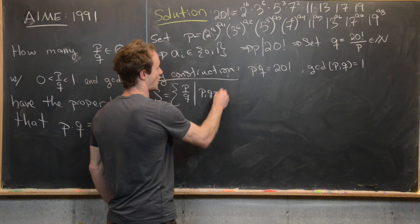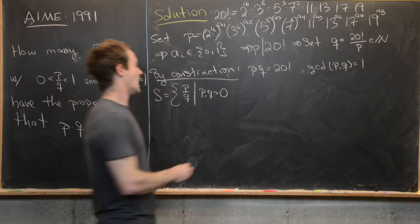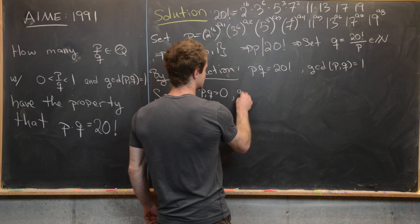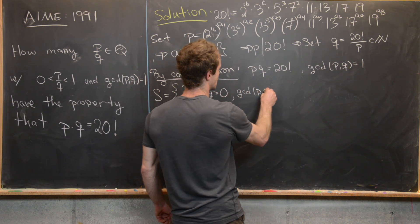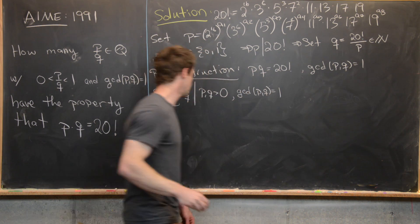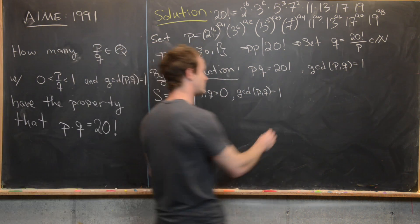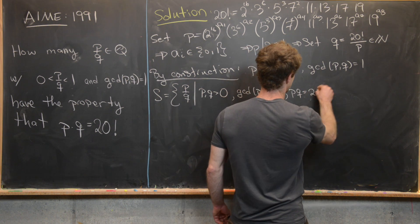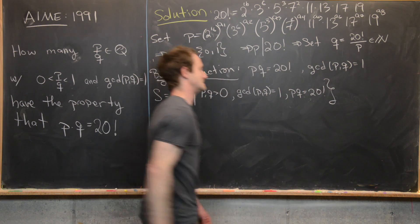first of all, P and Q are positive. And then next, we have the GCD of P and Q is 1. And then finally, we have P times Q equals 20 factorial.